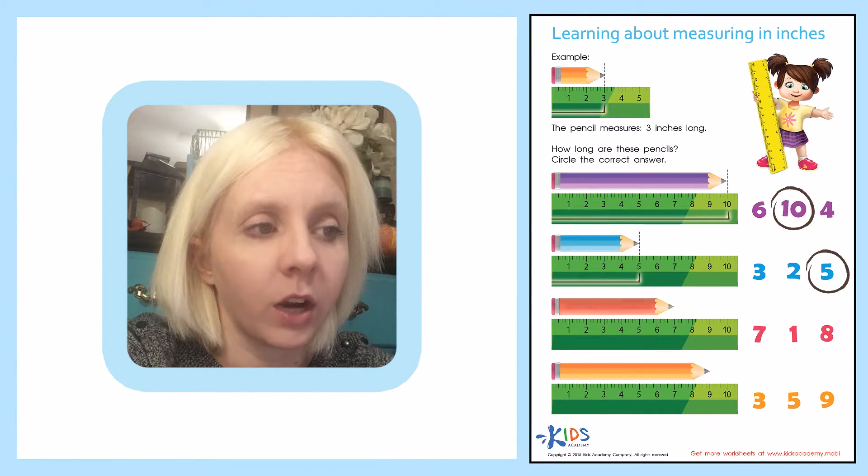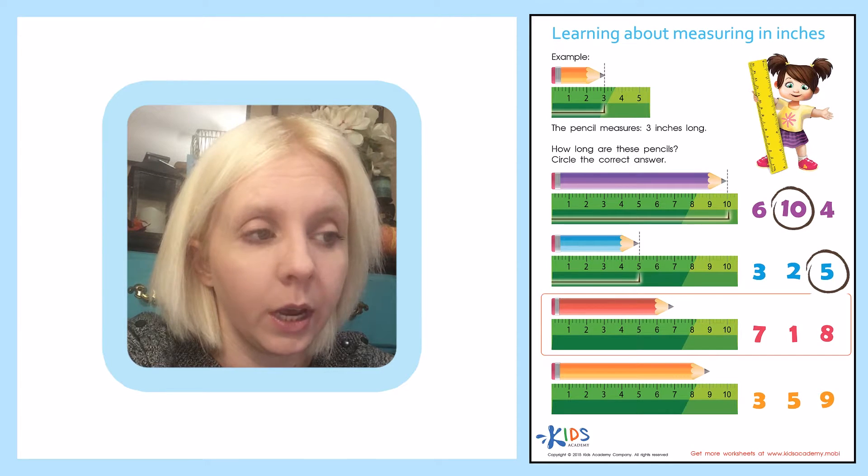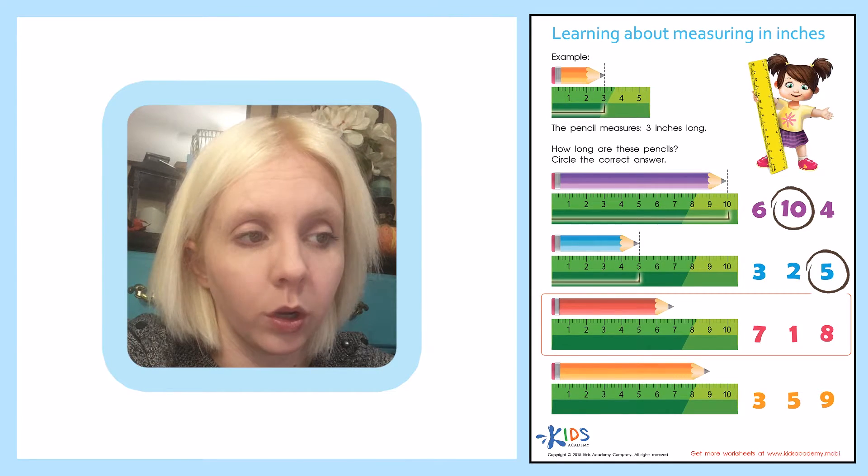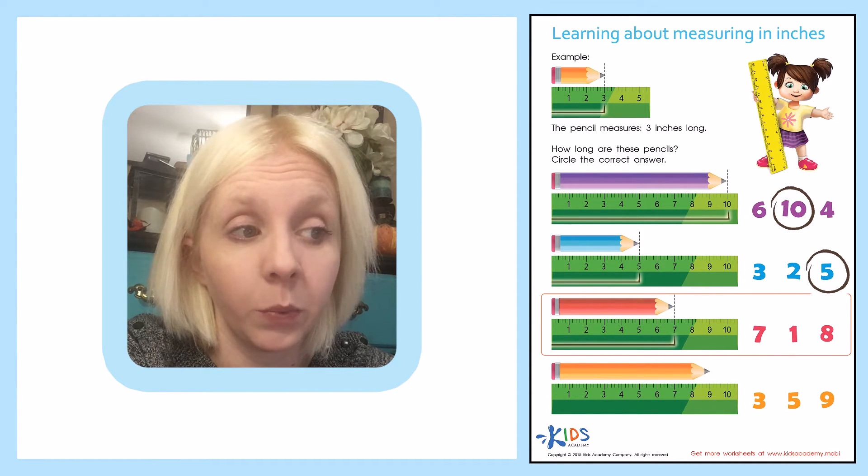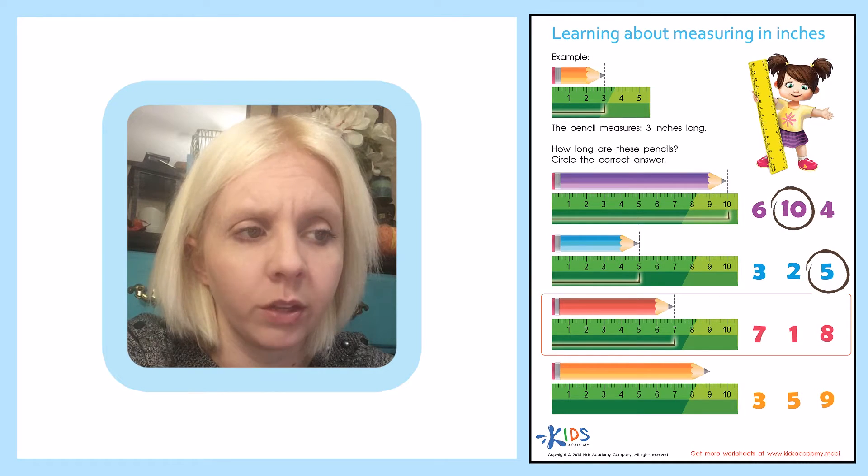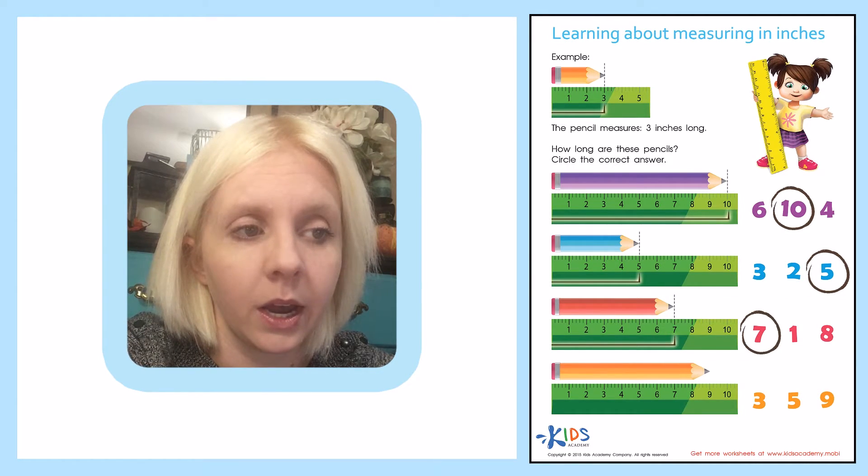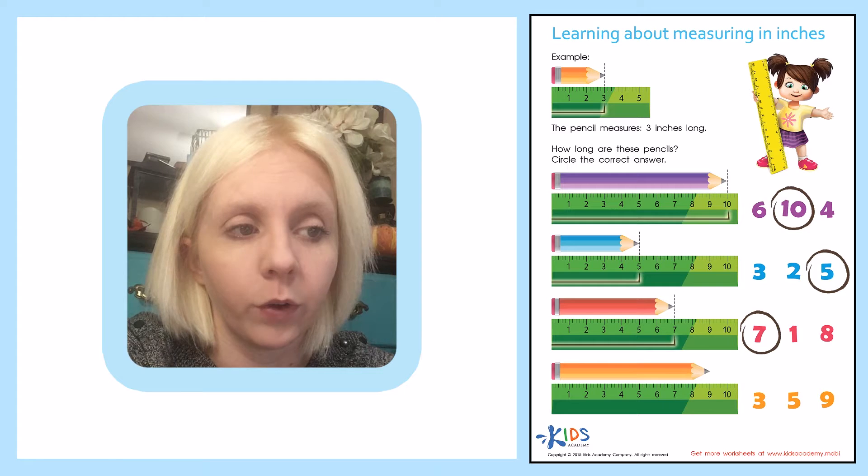And then I've got my red pencil. My red pencil is lined up against the ruler and it goes all the way over to this number right here, which is the number seven. And we could count them up, but I just know that that's seven. So I'm going to go ahead and circle that one right over here.